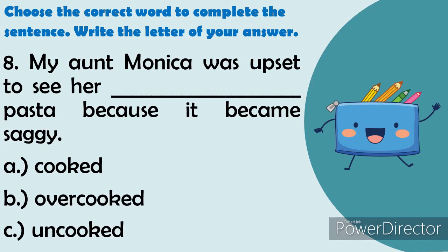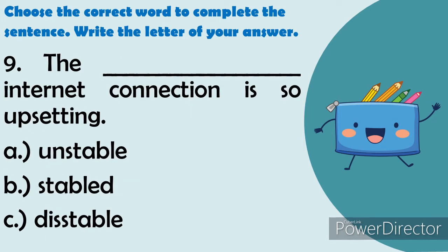Number 8: My aunt Monica was upset to see her blank pasta because it became saggy. The answer is: overcooked. Number 9: The blank internet connection is so upsetting. The answer is: unstable.